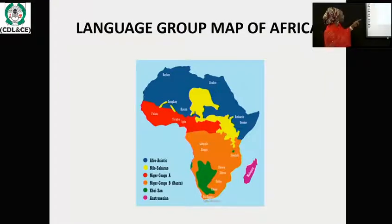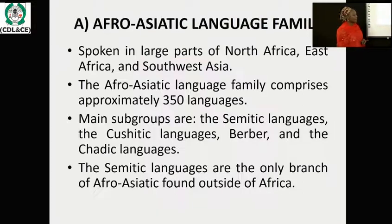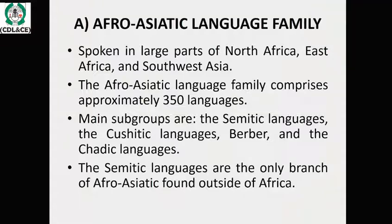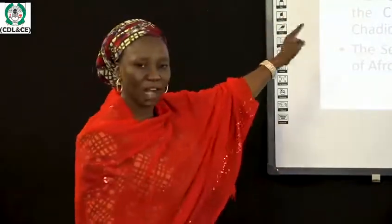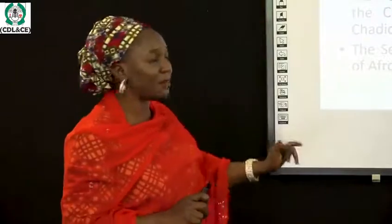Now, look at the map. This is the language group map of Africa. Each language group is designed according to a particular color so that you cannot get confused. You can see there is pink, yellow, blue, and green — all representing a particular language. Let's start with the Afro-Asiatic language family, the first language group. It is spoken in large parts of North Africa, East Africa, and South West Asia. The language family is dominated in these three areas.